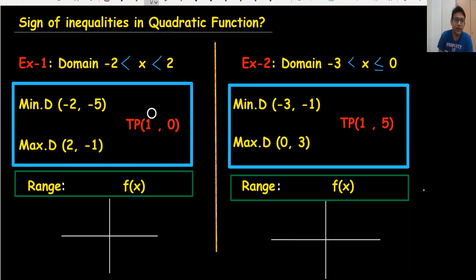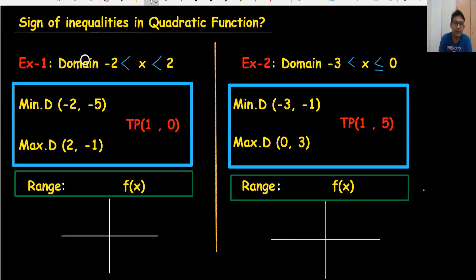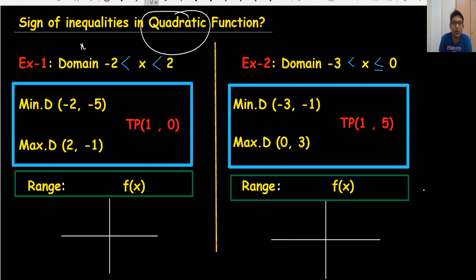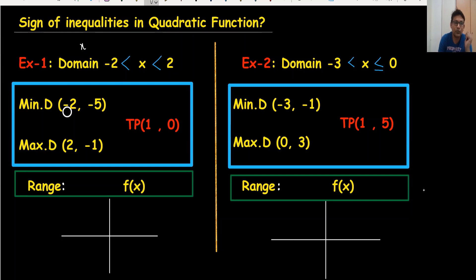I have divided this into two examples: example number one and example number two. In the first example, when you see the domain, the value of x is from minus two to two. And in quadratic functions, we have to use three coordinates.